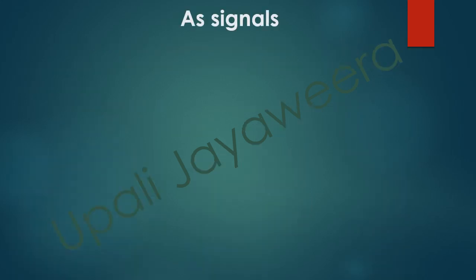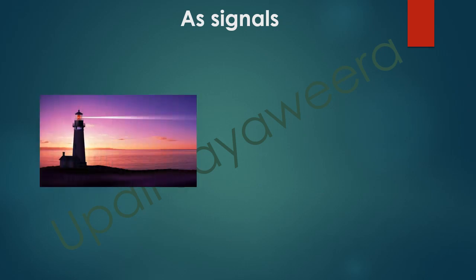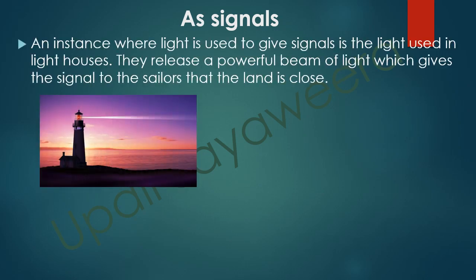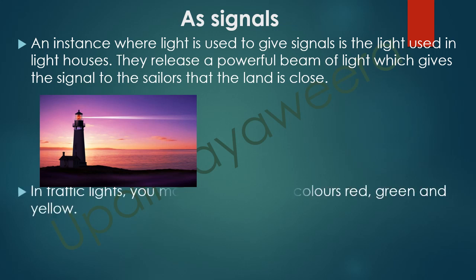As signals, we use light. An instance where light is used to give signals is the lighthouse — it releases a powerful beam of light which signals to sailors that land is close. In traffic lights you may have seen the colors red, green, and yellow.